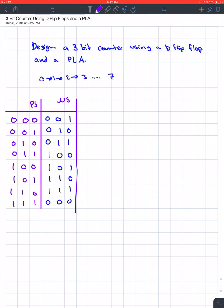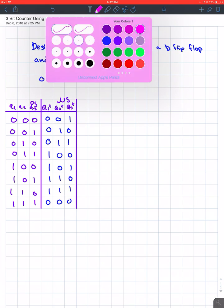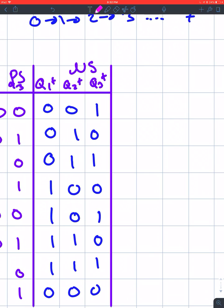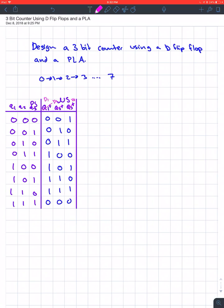So that's the first step — it's like the easiest step out of all of this. It says using a D flip-flop, so we got lucky. So this is going to be our Q1, Q2, and Q3. This is Q1+, Q2+, and Q3+.